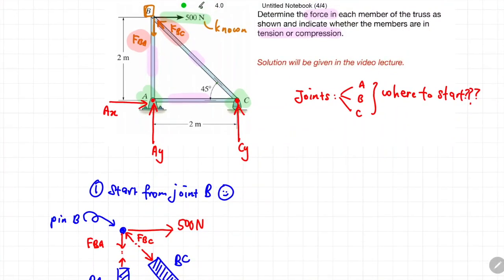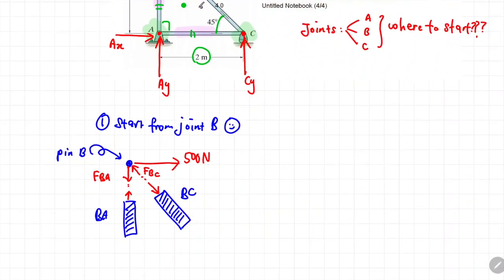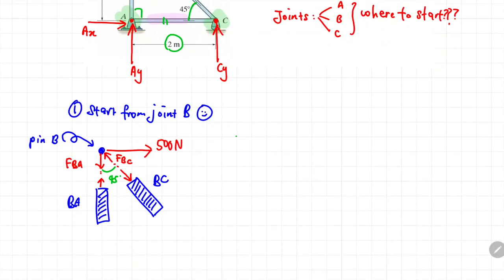Looking back at the truss structure, the angle here is 45 degrees. The length of beam AC is 2 meters and the length of beam AB is also 2 meters, making this an isosceles triangle. Therefore, the angle at the other corner is also 45 degrees. Let us put that information in our free body diagram. We are now ready to apply the equilibrium conditions.